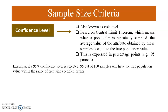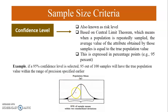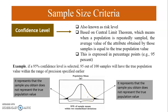If a 95% confidence level is selected, this is represented on a normal distribution curve where the population mean is at the center. It means that 95% of the sample means fall within two standard deviations. The black shaded regions on both sides represent sample means that do not represent the true population value. Your sample mean should fall into the white shaded area, as per the 95% confidence level.